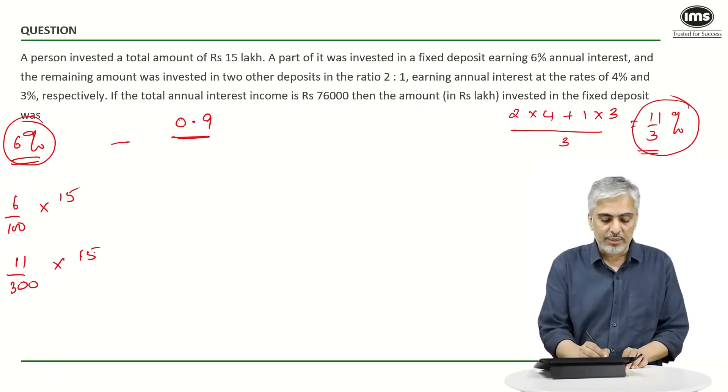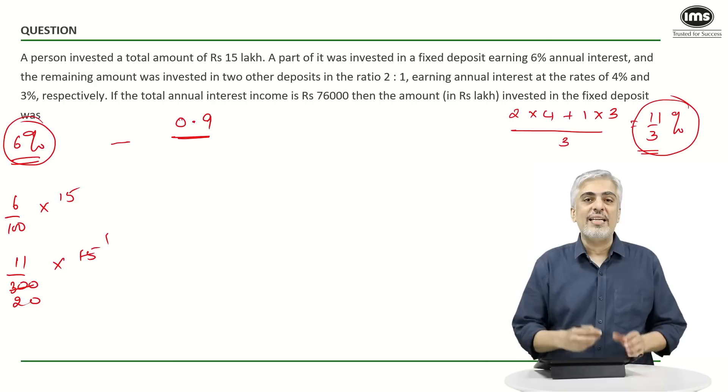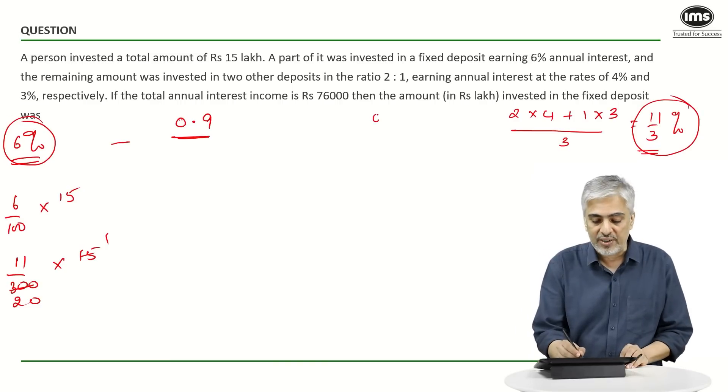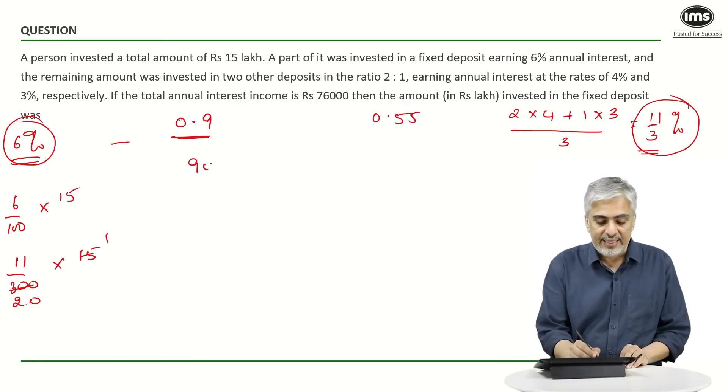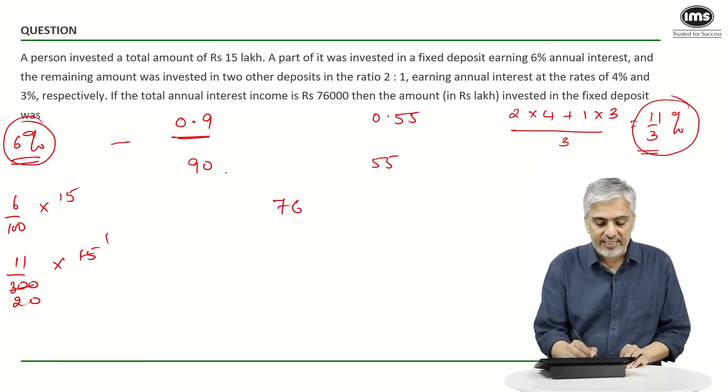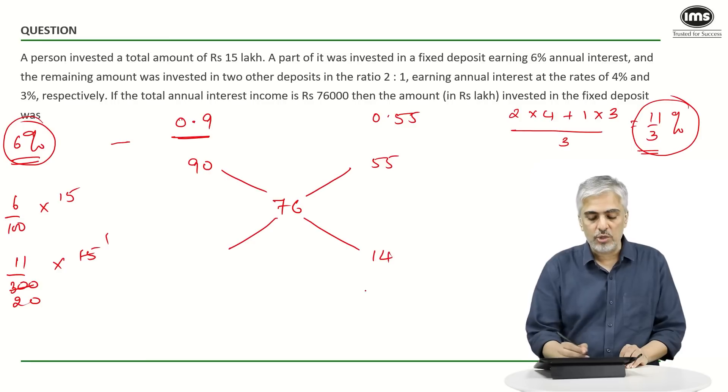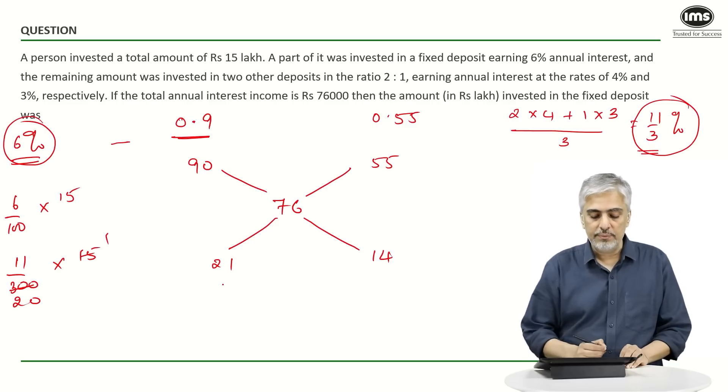Similarly, if he had invested everything at 11/3%, so that will be 11/300 of 15 lakhs. That will become 15 × 11 is... this will become 11/20, which is 5.5. 5.5 divided by 10 will become 0.55 lakhs. Or if you want to write in thousands, this will be 90,000, this will be 55,000, while your average was 76,000.